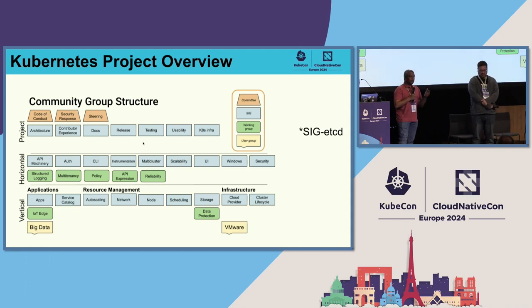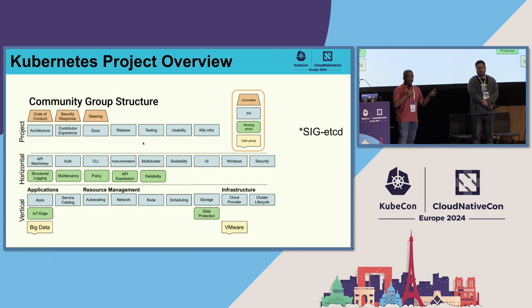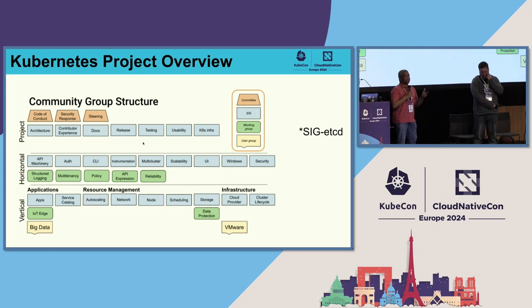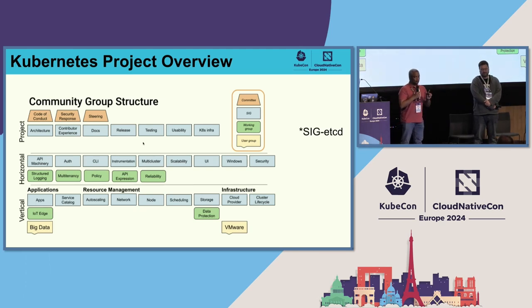Right at the top, we have the steering committee for Kubernetes. That takes care of figuring out what are the needs of the project — what do the people need, what are the CI/CD needs, how much things should cost. They help negotiate with CNCF and other entities. They are the leadership body. Steering does not do technical stuff by design. What they do is give it to SIG architecture to deal with the technical stuff, and SIG architecture in turn talks to each of the other SIGs to figure out what they want to do.